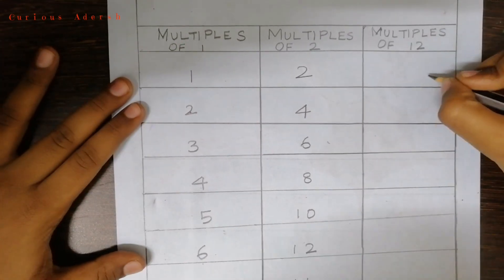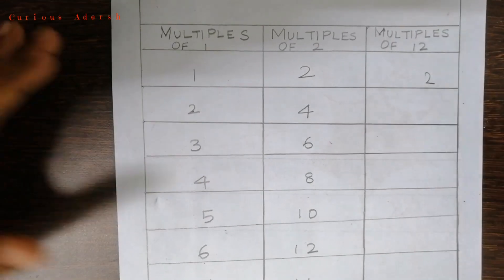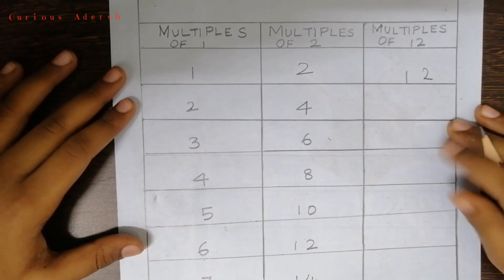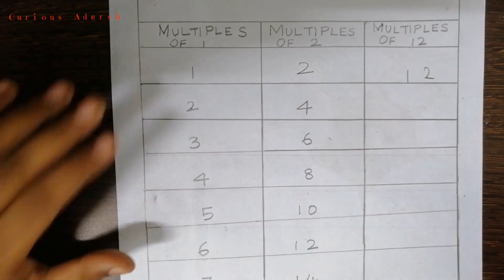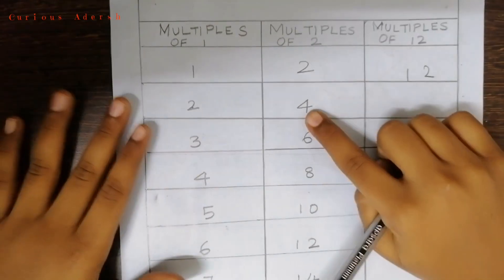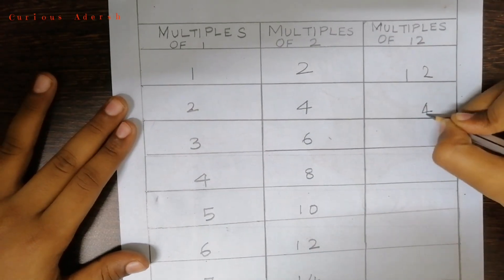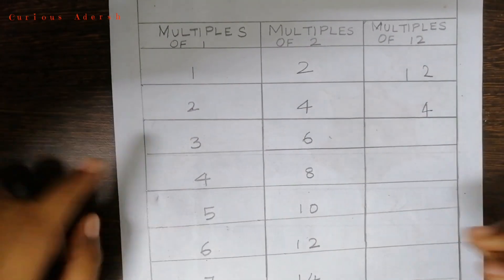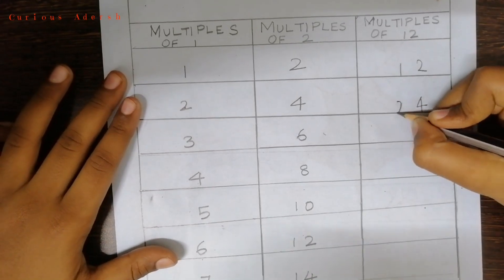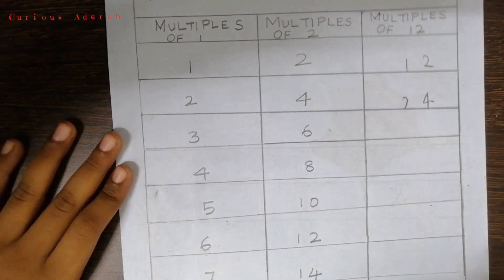So we'll write 2 and 1 as it is — 12. Remember, we always write the ones digit of the right side number first. So we'll write 4 and we'll write 2 as it is. The same rule applies to the rest of the numbers.